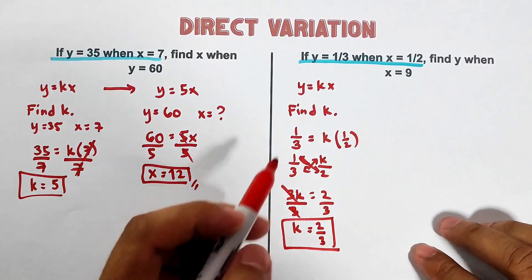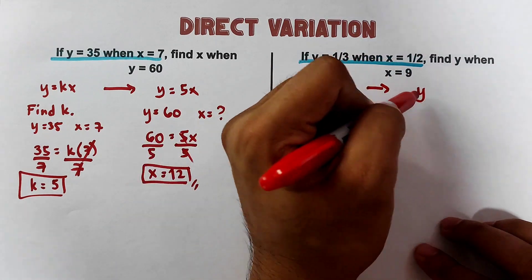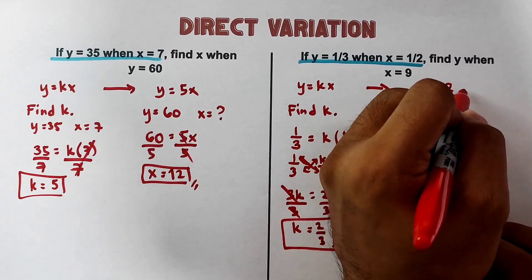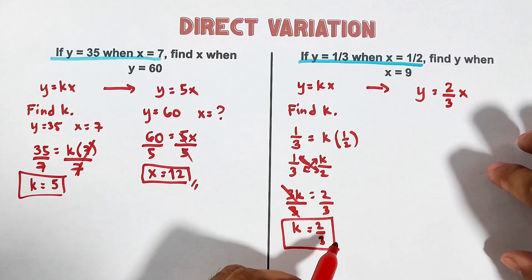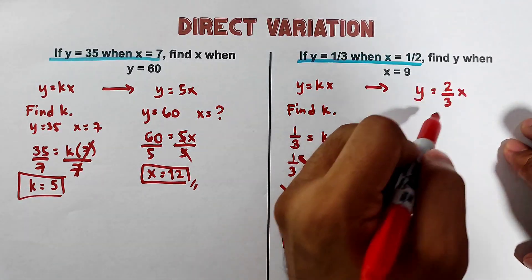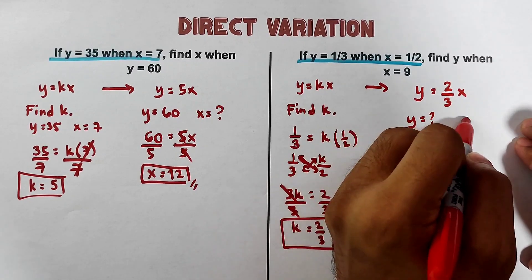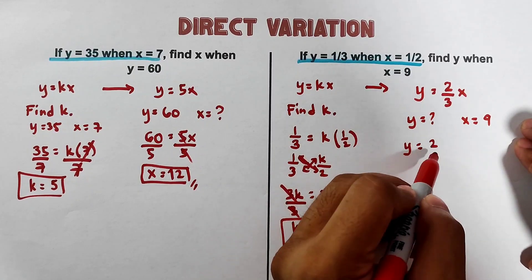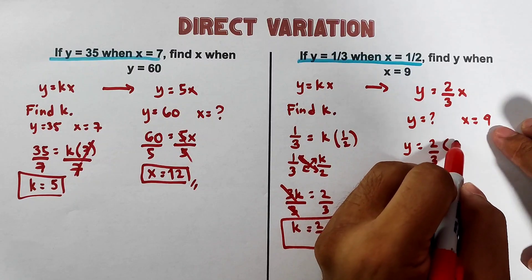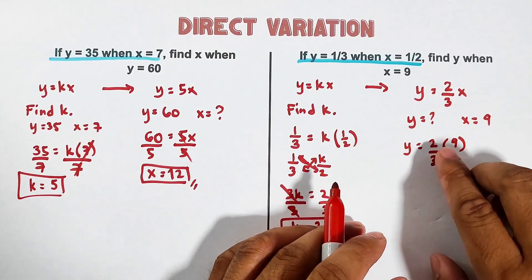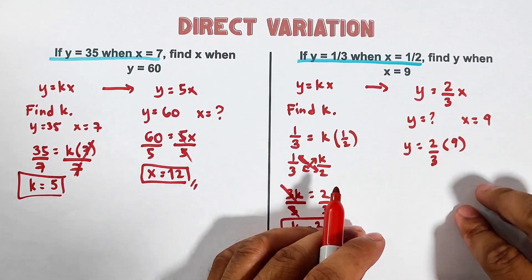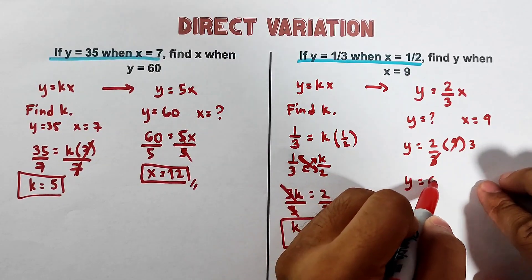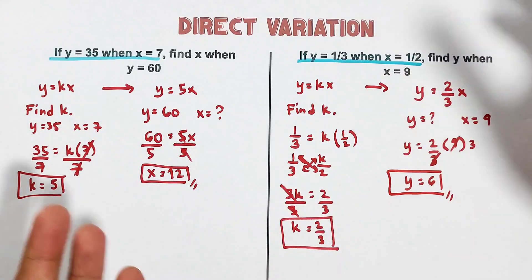The working equation becomes y = (2/3)x. To find y when x is equal to 9: substitute x = 9, giving y = (2/3) times 9. We can cancel 3 from 9, leaving 2 times 3, which equals 6. So y = 6 is the answer for example number 4.